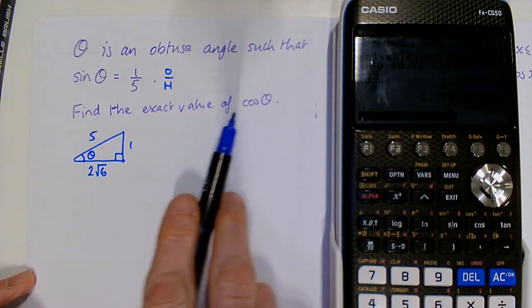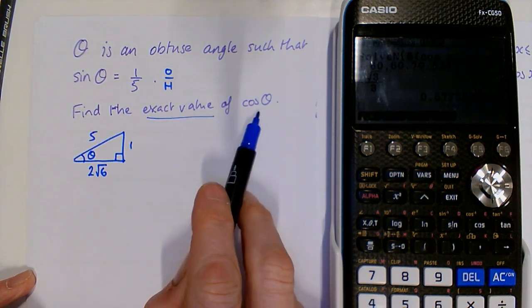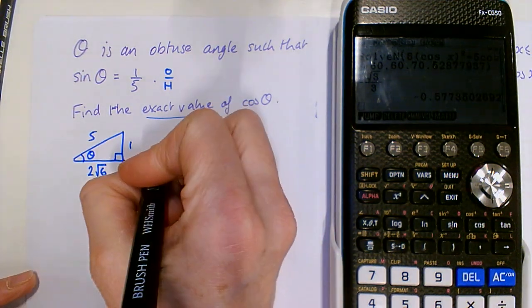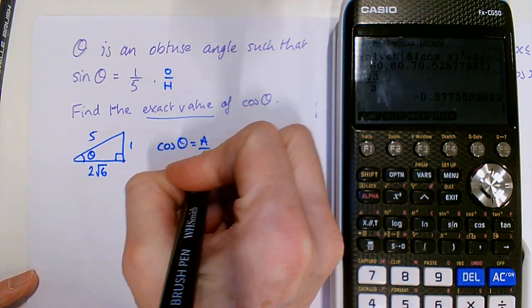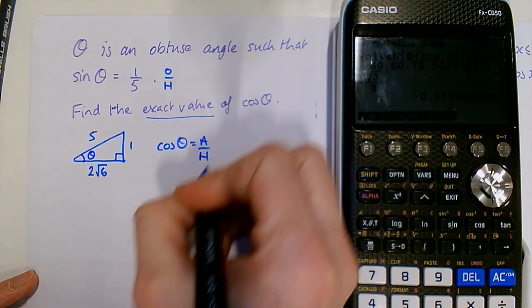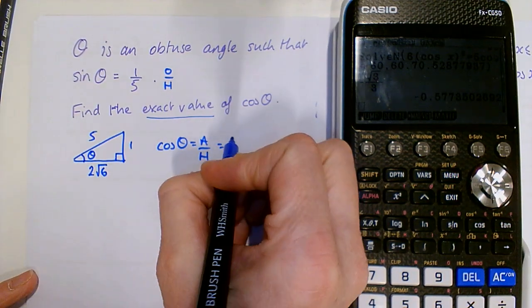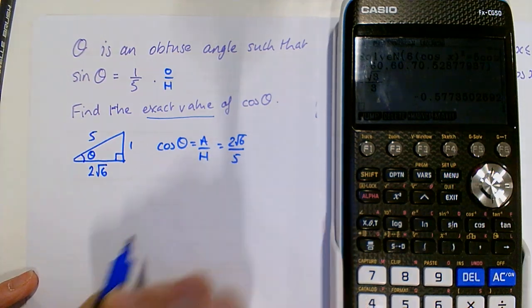We're asked to find the exact value, so we can't use decimals, of cos theta. So cos theta is adjacent over hypotenuse, and we know that that would be 2 root 6 over 5.